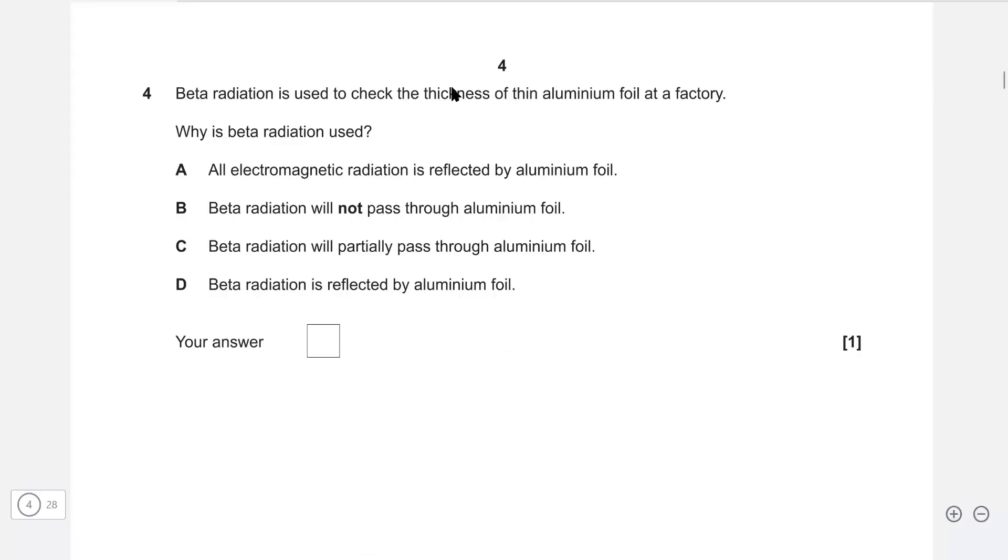Beta radiation is used to check the thickness of thin aluminum foil. Why is beta radiation used? The correct answer is C, because it only partially passes through aluminum foil. Imagine you have some electrons or beta particles. Their intensity drops with thickness. Depending on how much it drops by, we could tell the actual thickness of the foil.